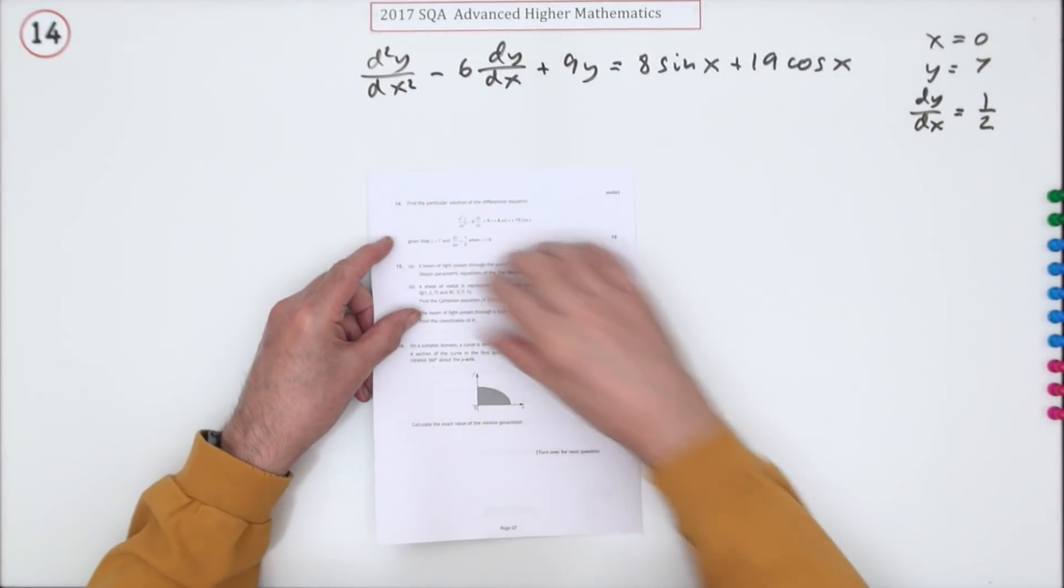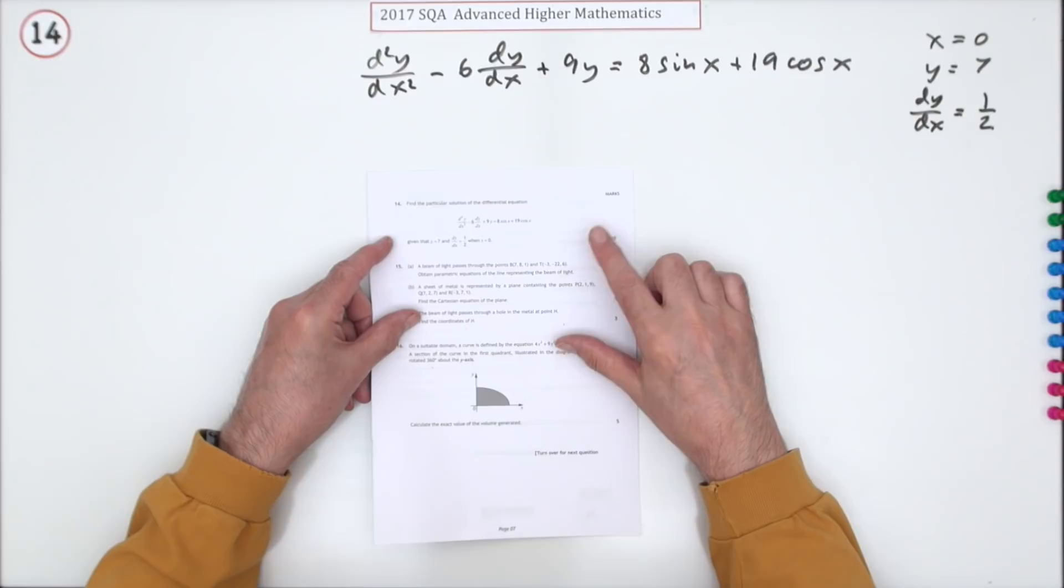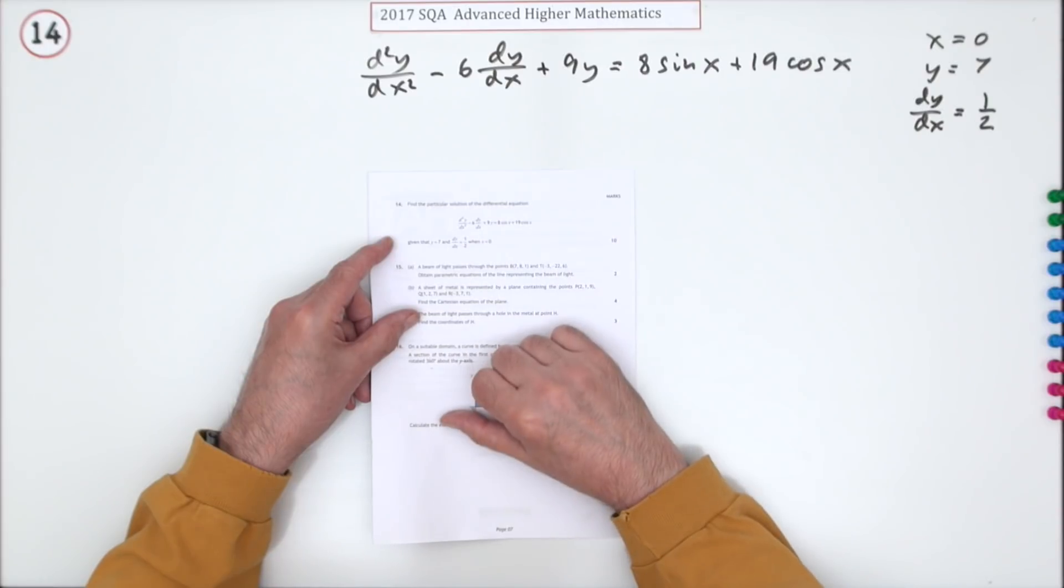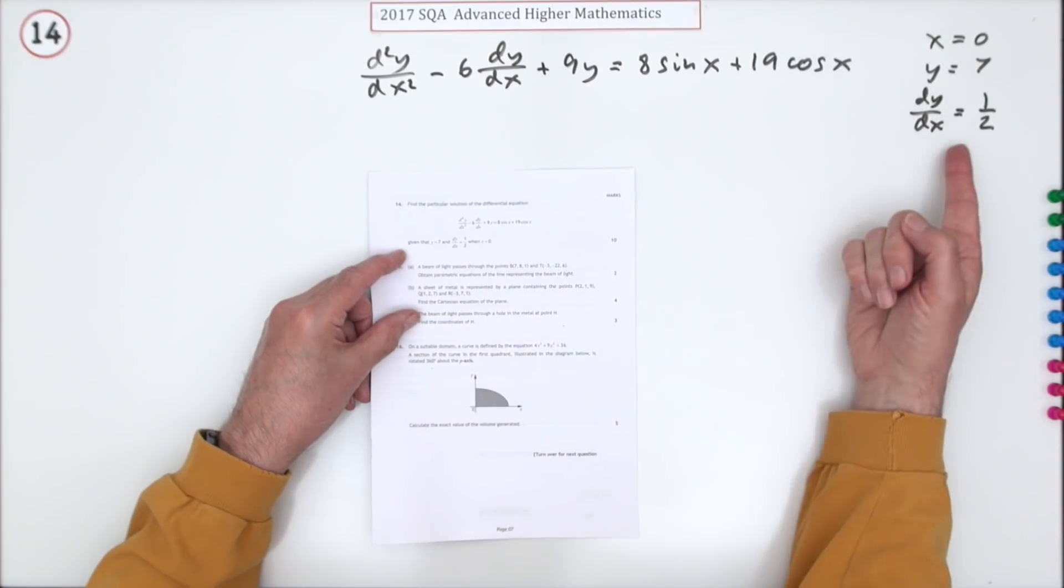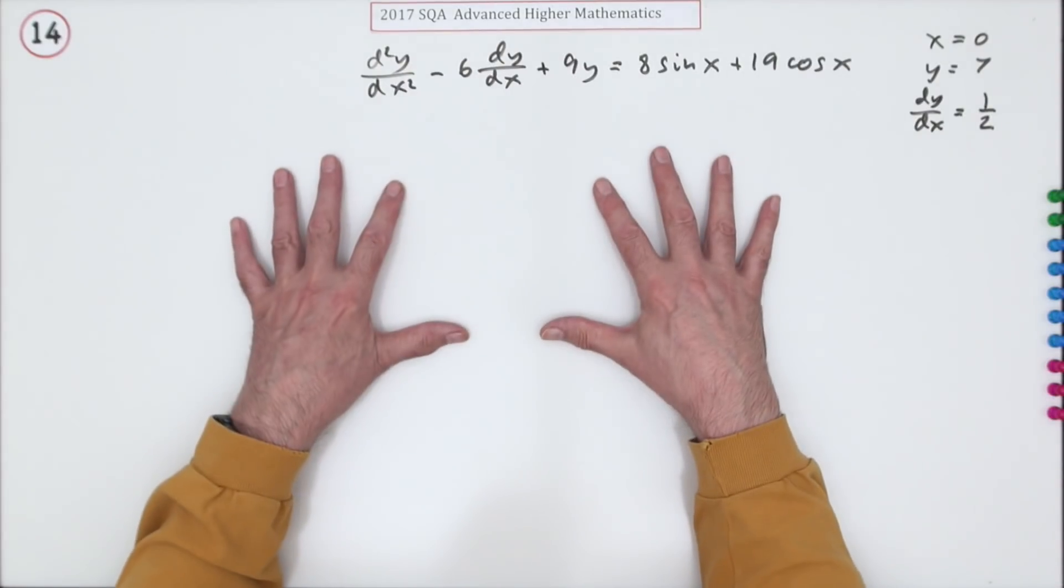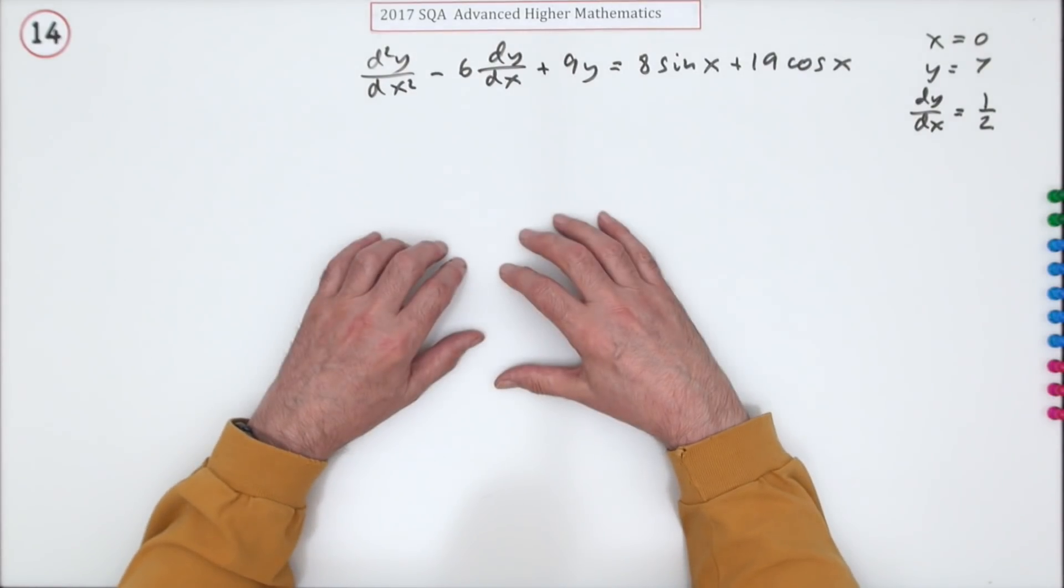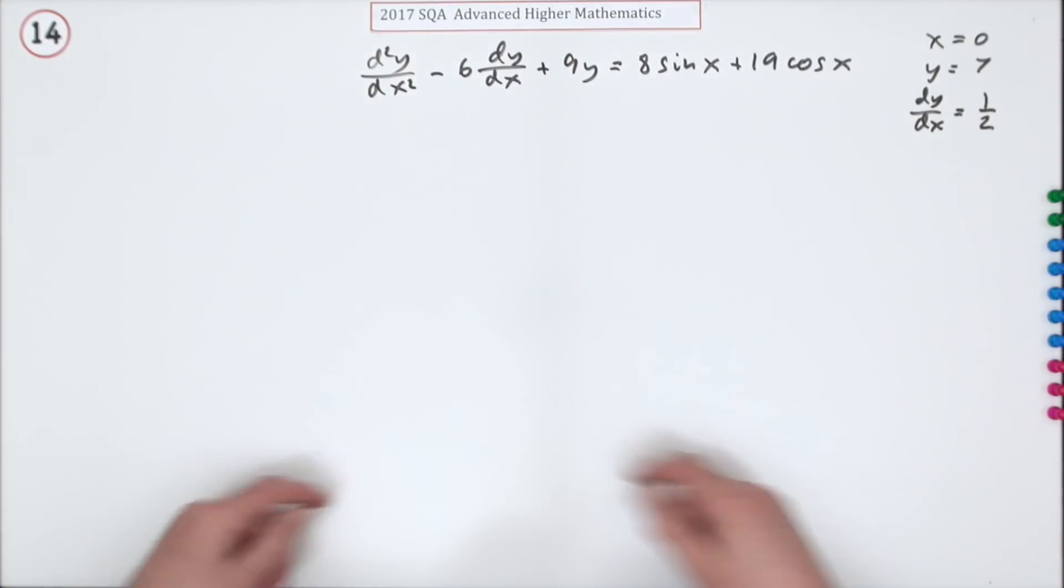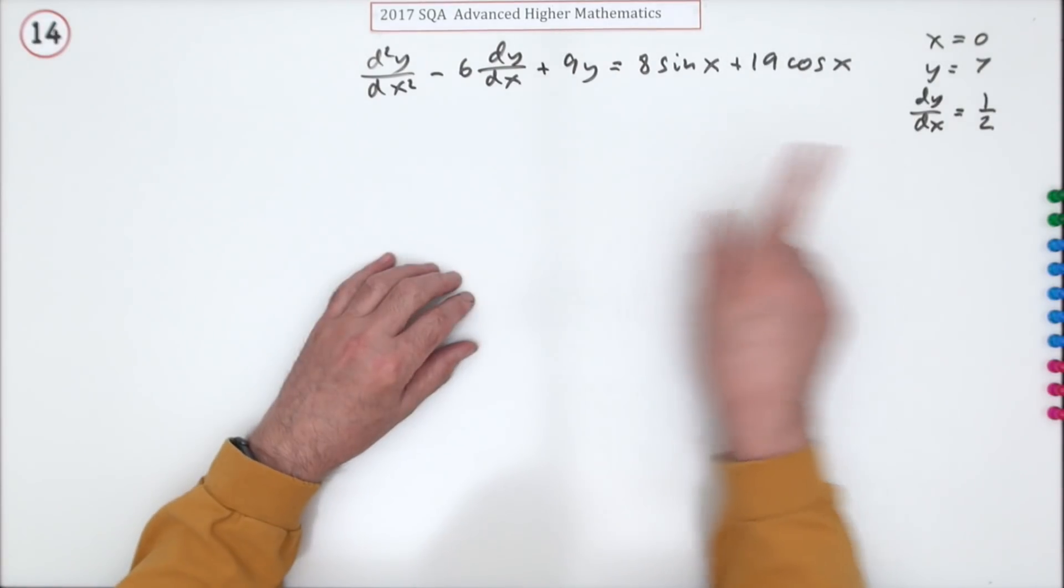Number 14 from the 2017 Advanced Higher Maths, worth 10 marks, for finding the particular solution to the second order differential equation given these initial conditions. This should be a well-trodden path that you're familiar with. You just go through the usual route, the three parts are...